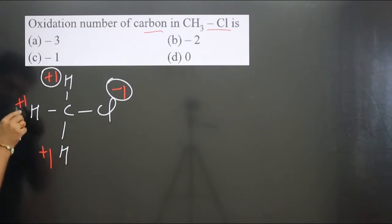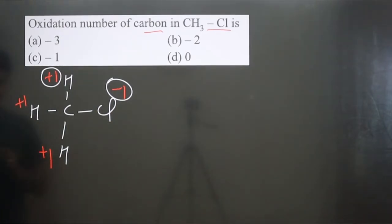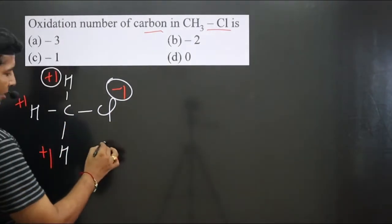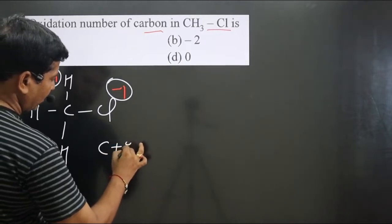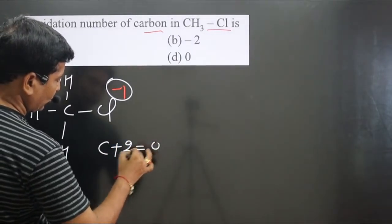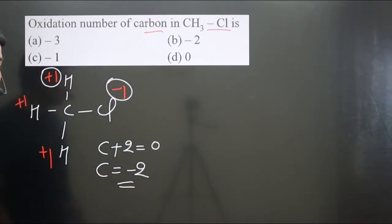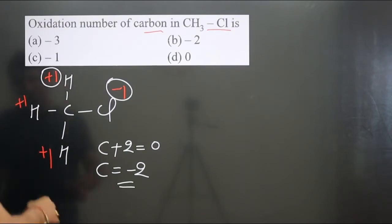This hydrogen is +1, this is also +1, so for carbon: carbon + 2 = 0, therefore carbon = -2. Carbon is present in a -2 oxidation state.